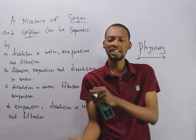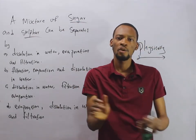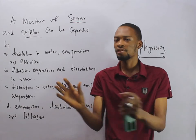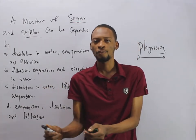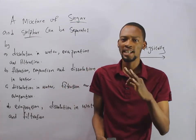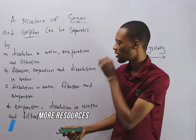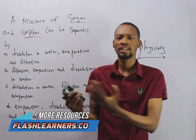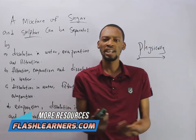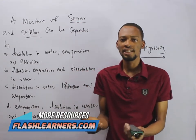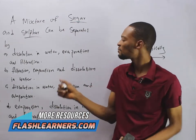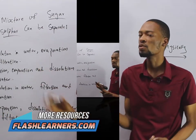We perform dissolution in water followed by filtration. Once the sugar dissolves, you are left with sulfur. When you filter, the water passes through and you are left with sulfur. Then you have the filtrate, which is water and dissolved sugar.